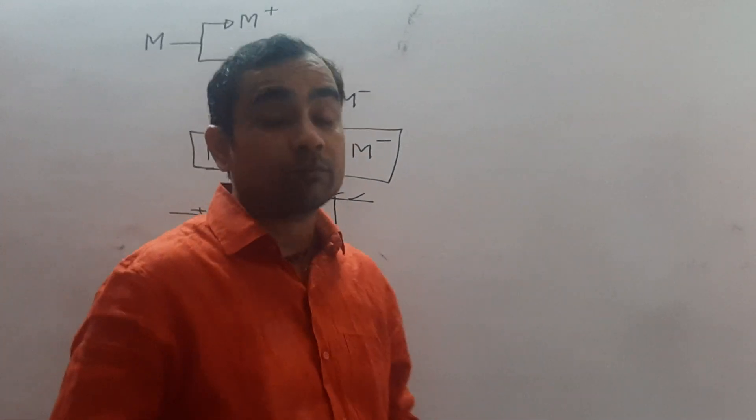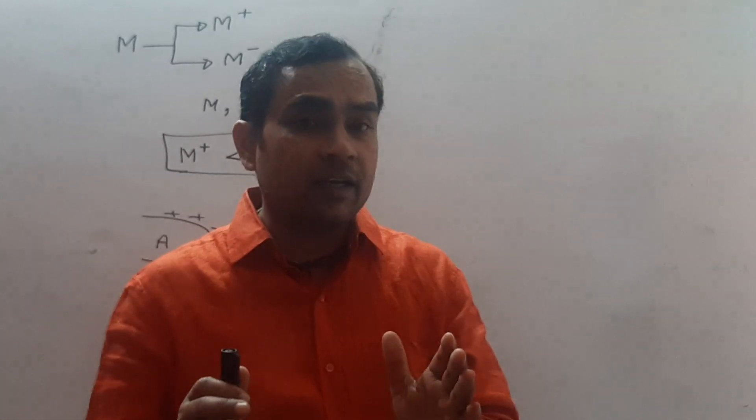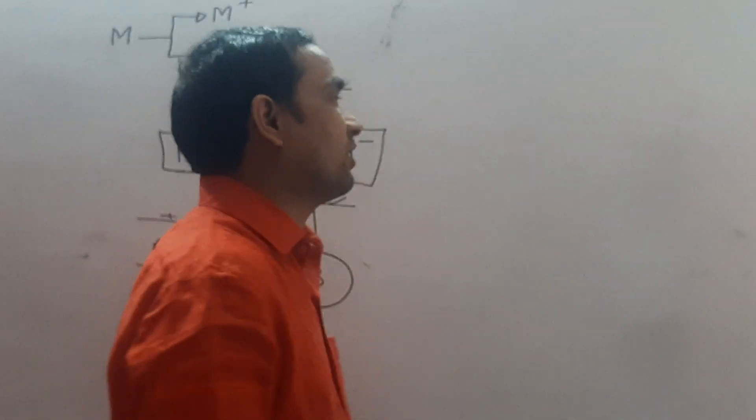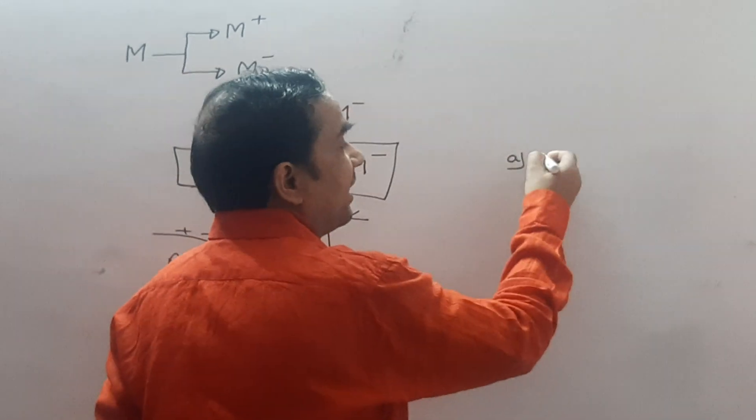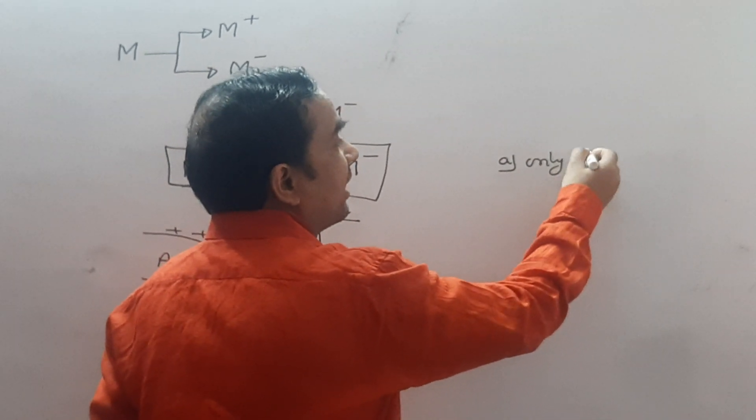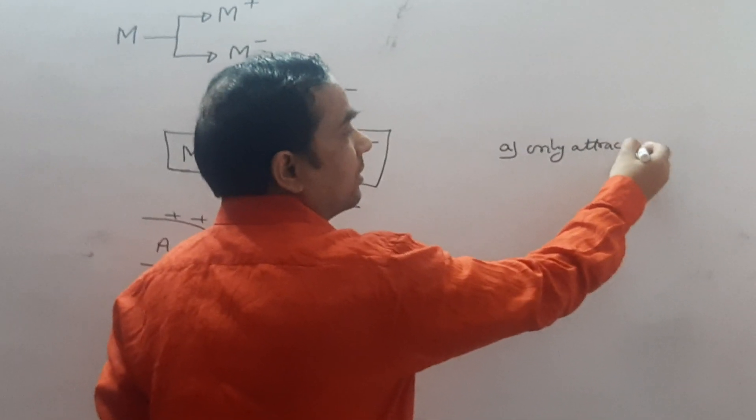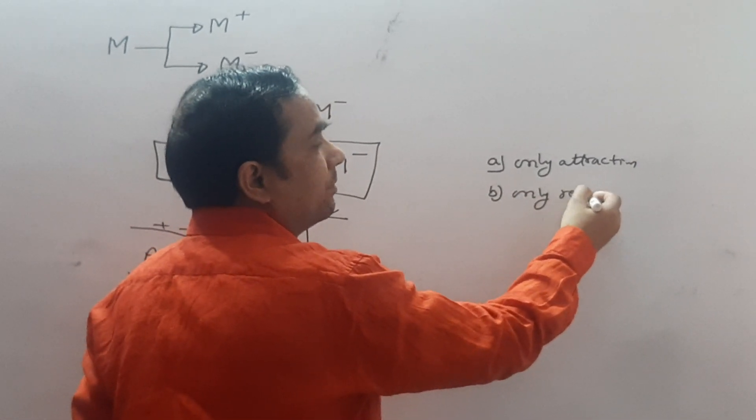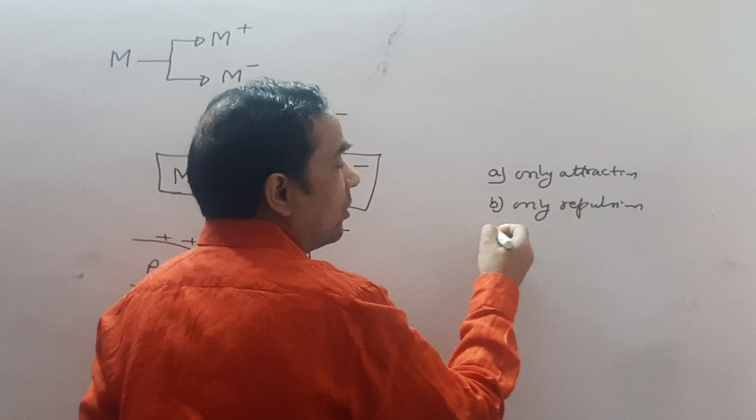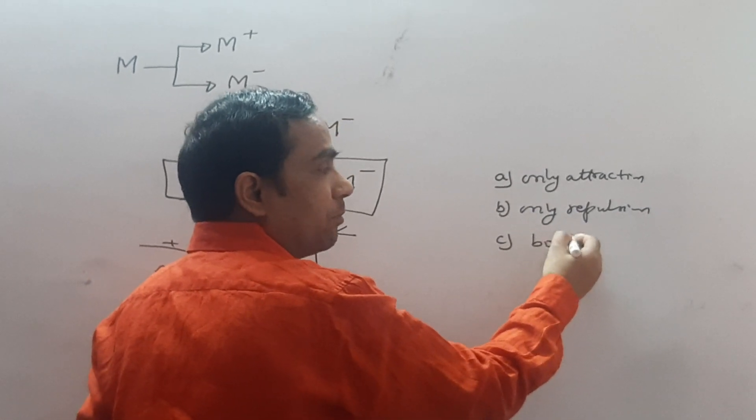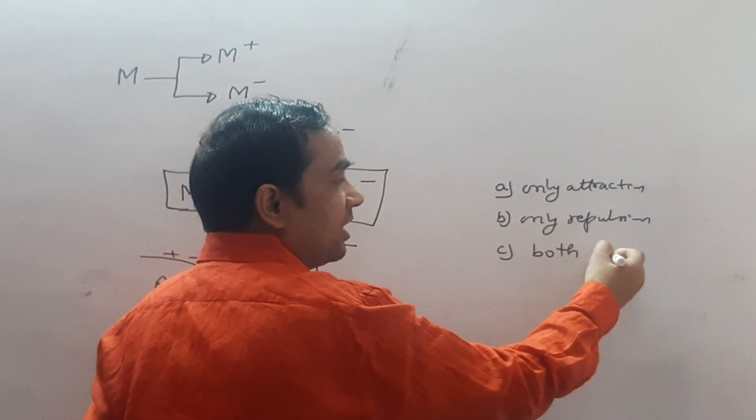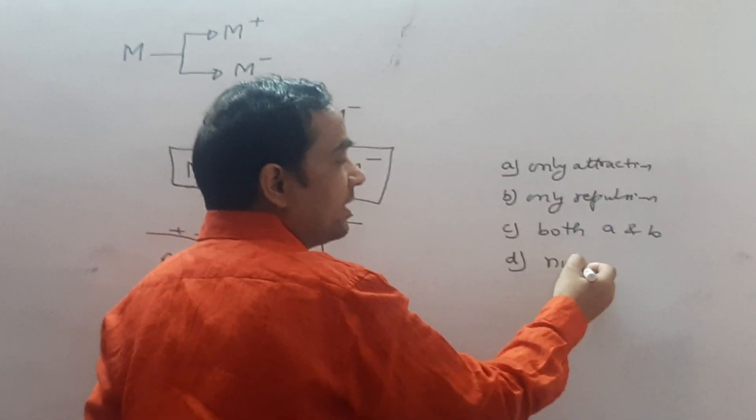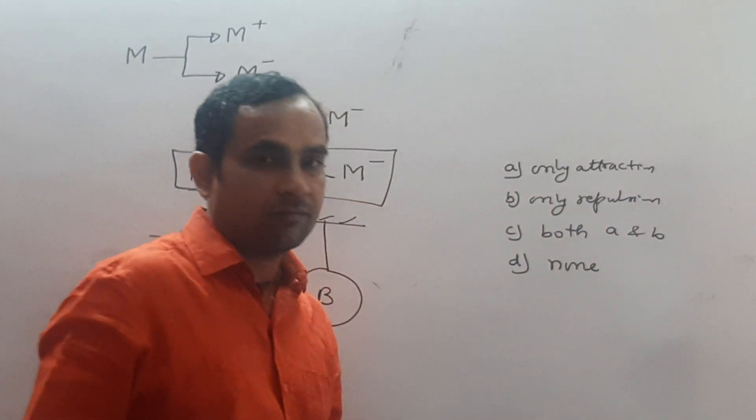Next question. Which one is confirmed, surest test of electrification? Option A: only attraction. Option B: only repulsion. Option C: both attraction and repulsion. Option D: none.